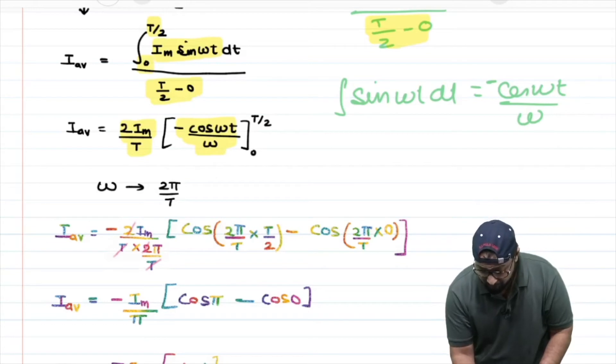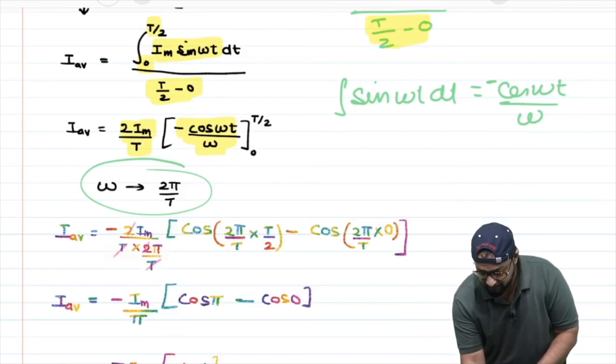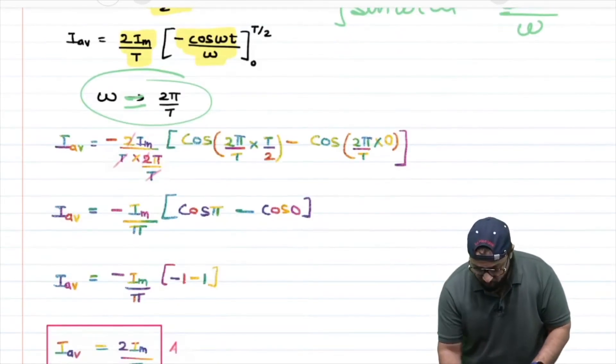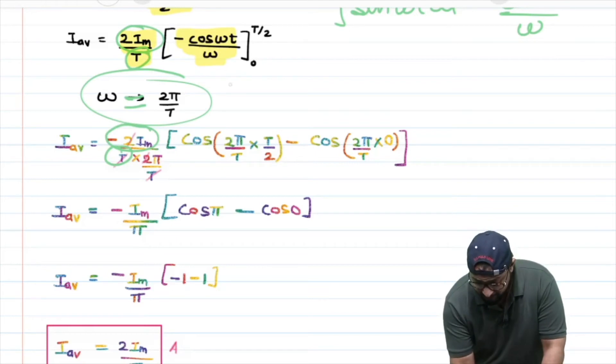So as the integration of sin becomes -cos(ωt)/ω, I substituted for ω. Since my time limit had capital T (the time period), I wrote ω equal to 2π/T. Here, look...